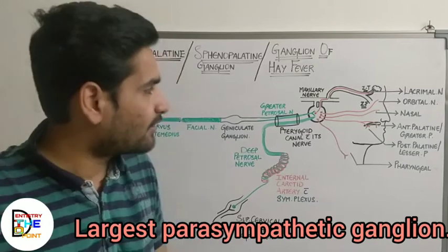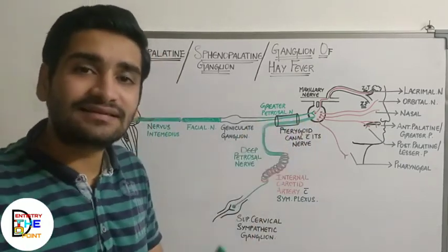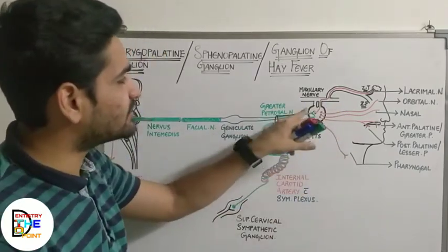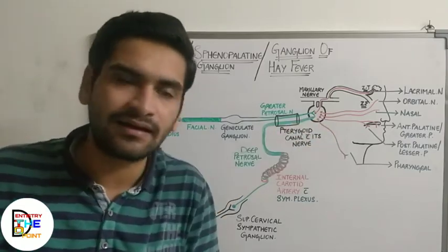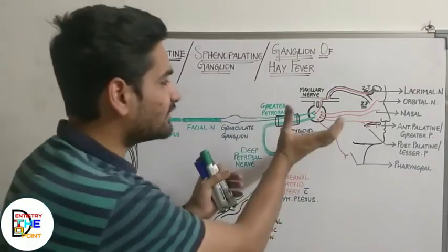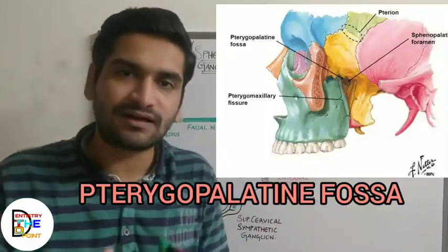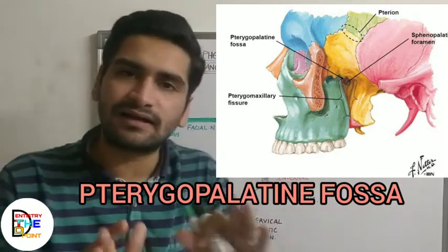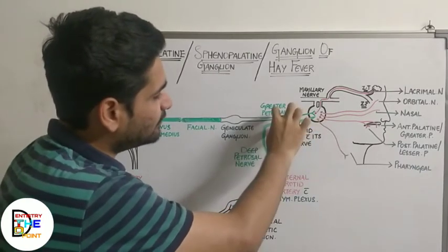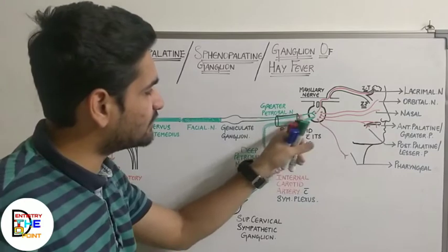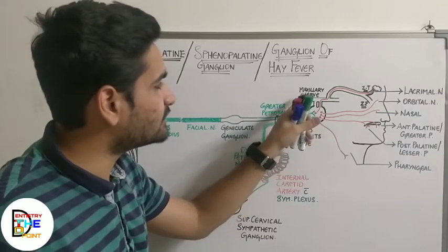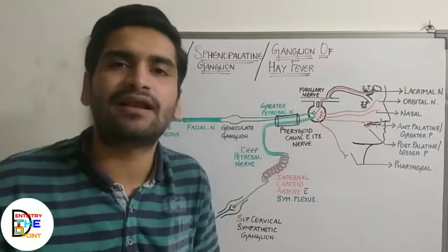The pterygopalatine ganglion is situated just below the maxillary nerve, and it is located in the pterygopalatine fossa. This black structure in the diagram is your pterygopalatine ganglion. It is situated just in front of the pterygoid canal and just below the maxillary nerve, within the pterygopalatine fossa.